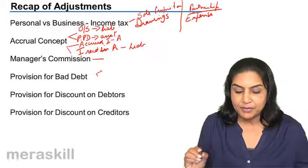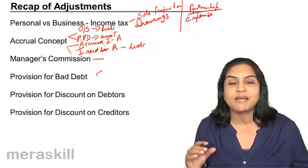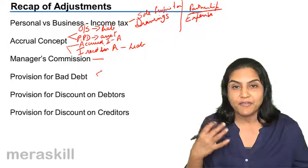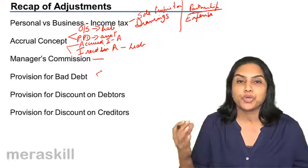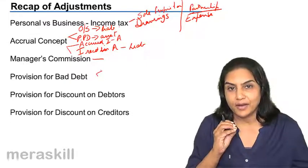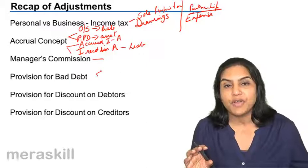Next, we discussed provision for bad debts. We discussed bad debts and provision for bad debts. Bad debt is an amount which is to be recovered, which was receivable but which we know that we will no longer be able to collect. This amount is written off as a bad debt.